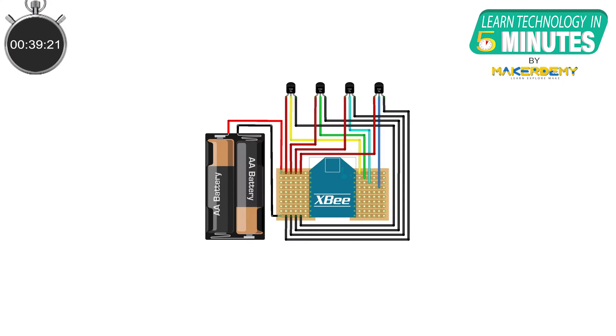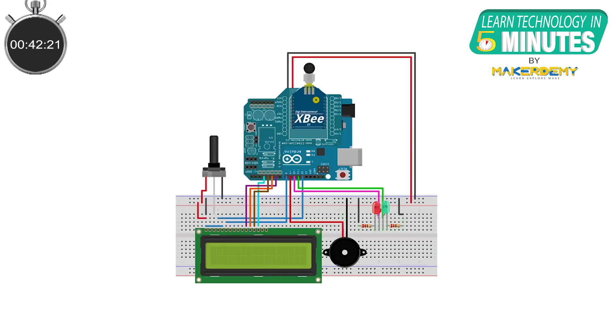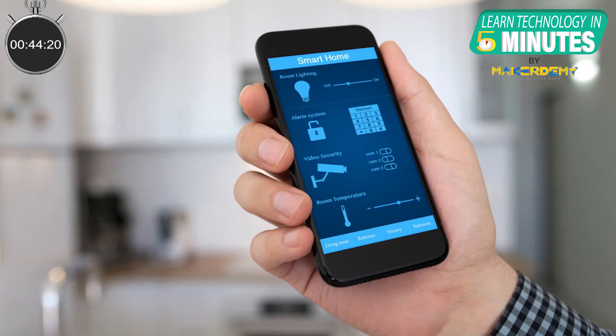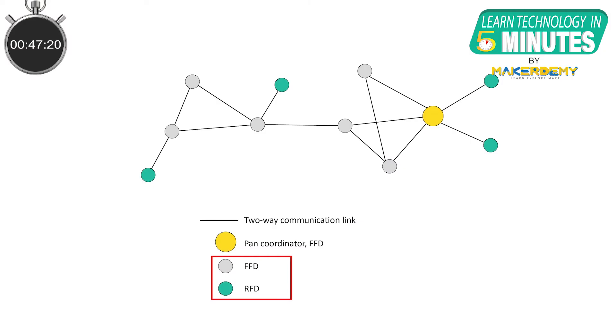A single node can be used for various applications, such as lighting control, smoke detector, and home security monitoring. There are two types of nodes in a Zigbee network.